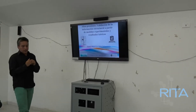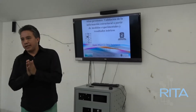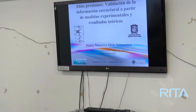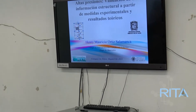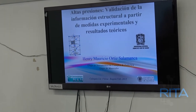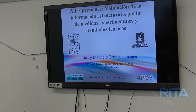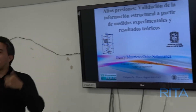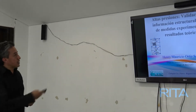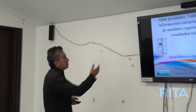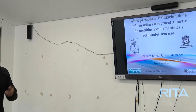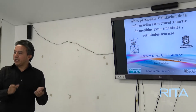¿Qué quiere decir eso? El método científico tiene varios pilares, entre ellos cómo validar los resultados. Para validar los resultados, el método científico usualmente habla de resultados teóricos, resultados experimentales, o dos técnicas experimentales por las cuales usted obtenga un resultado que permita decir que tenemos el comportamiento del sistema, fundamentalmente.